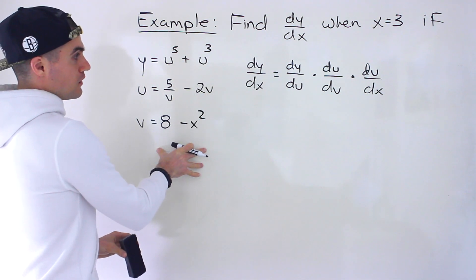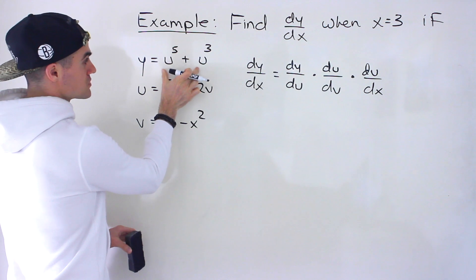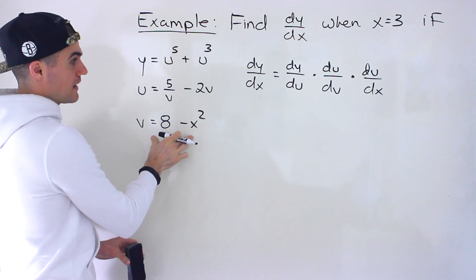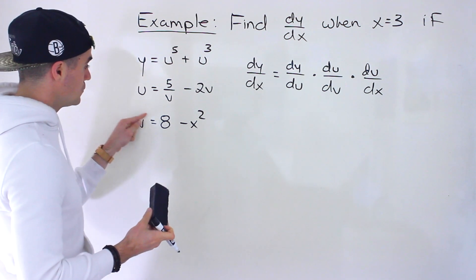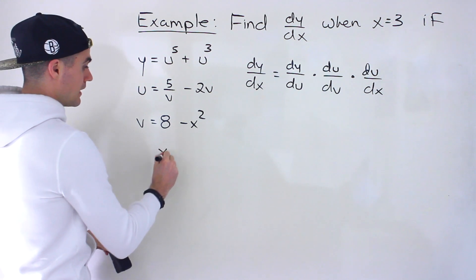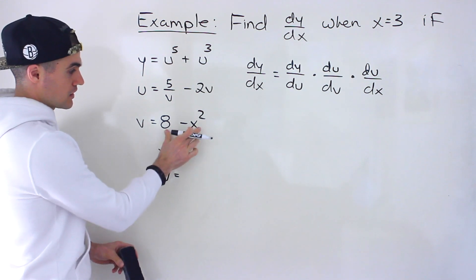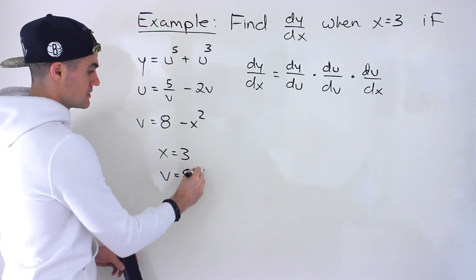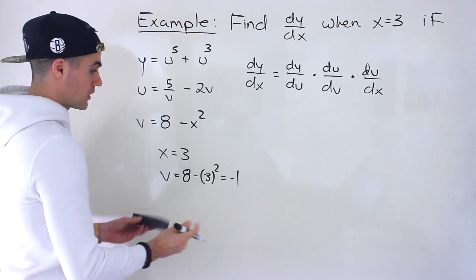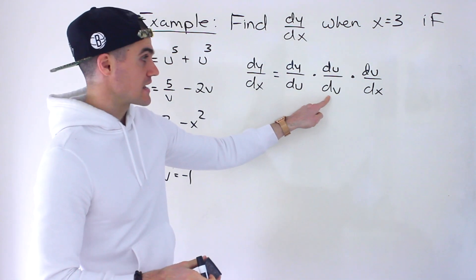We need to find the derivatives of all three, but we also have to plug in values. Note that dy/du will be in terms of u, du/dv in terms of v, and dv/dx in terms of x. So first, let's find what values of v and u we'll be plugging in. We're plugging in x equals 3, so for v: 8 minus 3 squared equals 8 minus 9, which gives us negative 1. So we'll be plugging in negative 1 for v.